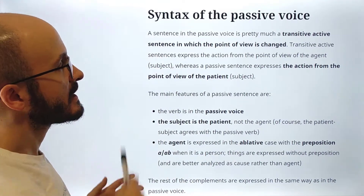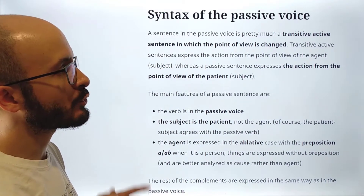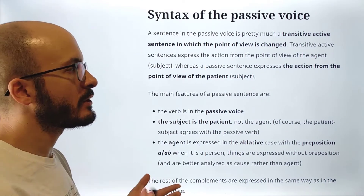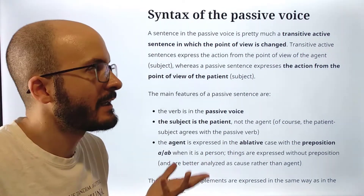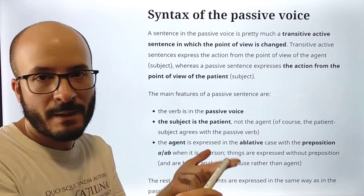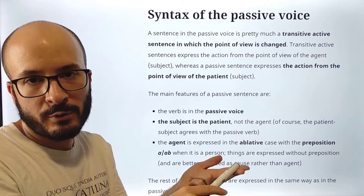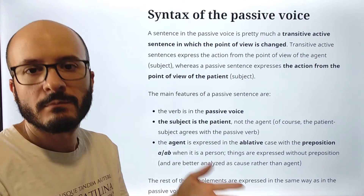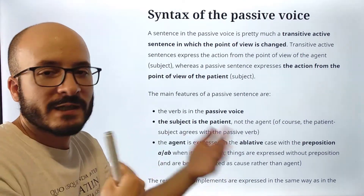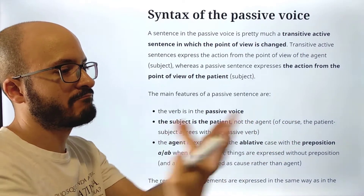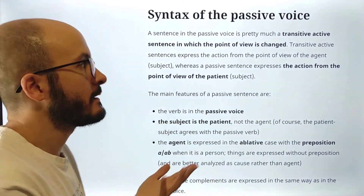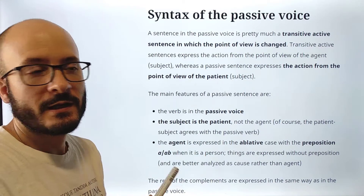A sentence in the passive voice is pretty much a transitive active sentence in which the point of view is changed. So in English, we would say 'I eat an apple' — active — or 'an apple is eaten by me' — passive. That's pretty much the same sentence, but said from different perspectives. One is active, the other one is passive.